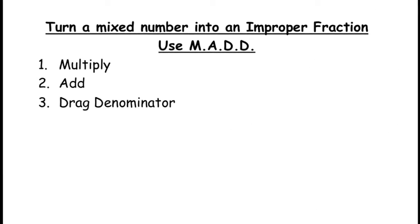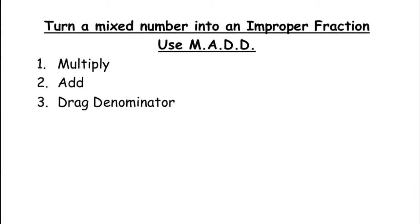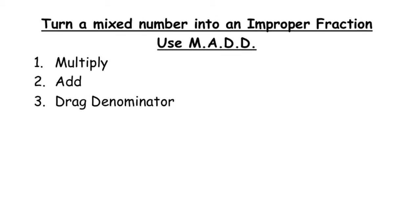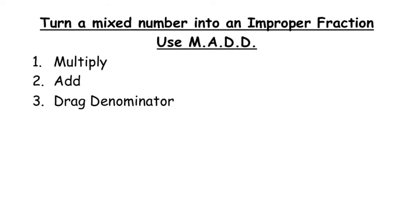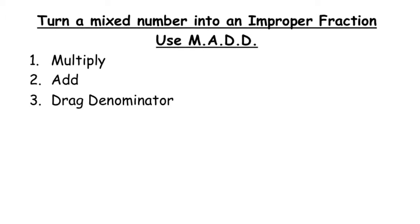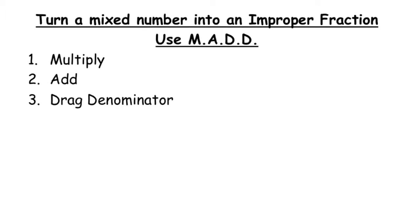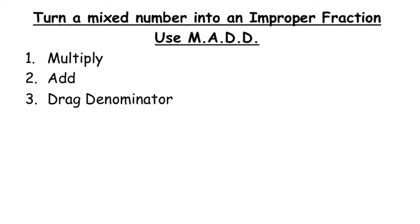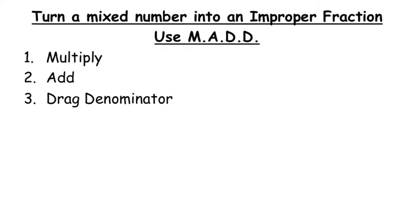The first thing you have to know is that when you have mixed numbers and you want to multiply or divide them, it's best if you turn them into improper fractions. Then you do that using what I call MAD: multiply the denominator with your whole number, add that answer to your numerator, and then drag the denominator along for the ride.